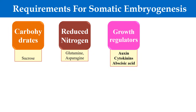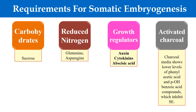In case of auxin, we generally use 2,4-D, that is 2,4-dichlorophenoxyacetic acid. While for cytokinins, we use kinetin. These hormones induce the formation of somatic embryo. The next requirement is activated charcoal. When activated charcoal is added to the medium, it absorbs phenylacetic compounds and parabenzoic acid compounds, which generally inhibit somatic embryogenesis. So activated charcoal absorbs these inhibitors and ultimately favors the formation of somatic embryo.